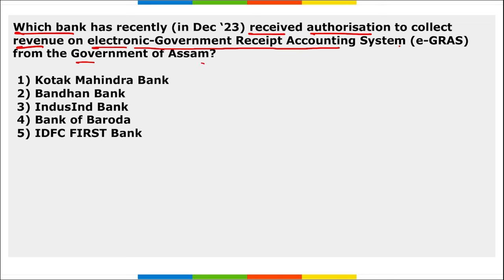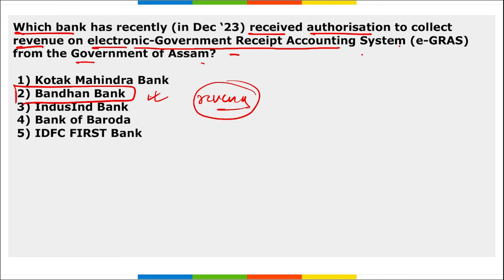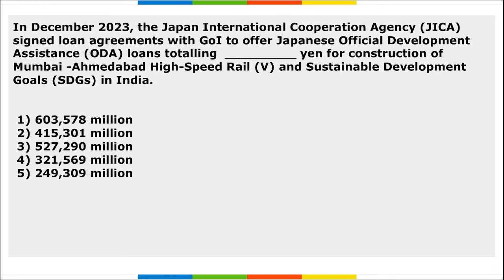Next: which bank has recently received authorization to collect revenue on the Electronic Government Receipt Accounting System from the Government of Assam? It is Bandhan Bank. They will collect revenue such as house tax, vehicle registration tax, local body tax, and water bills on behalf of the Government of Assam.